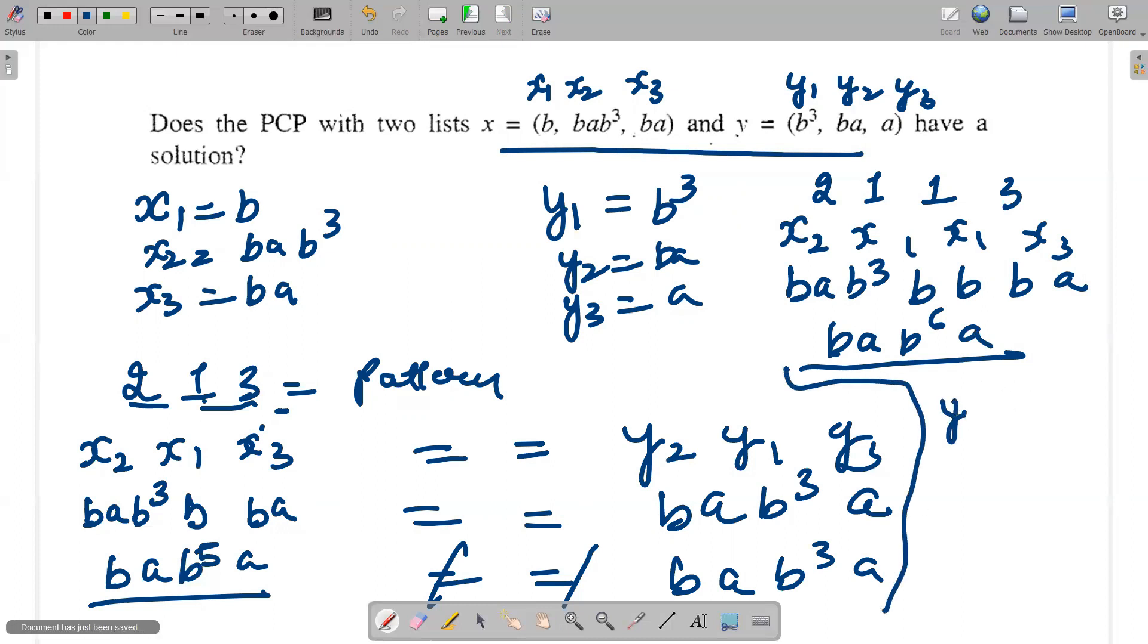I'll similarly test for y2, y1, y1, y3. y2 is ba, y1 is b³, y1 is b³ again, and y3 is a. So we have got bab⁶a. From checking the patterns,